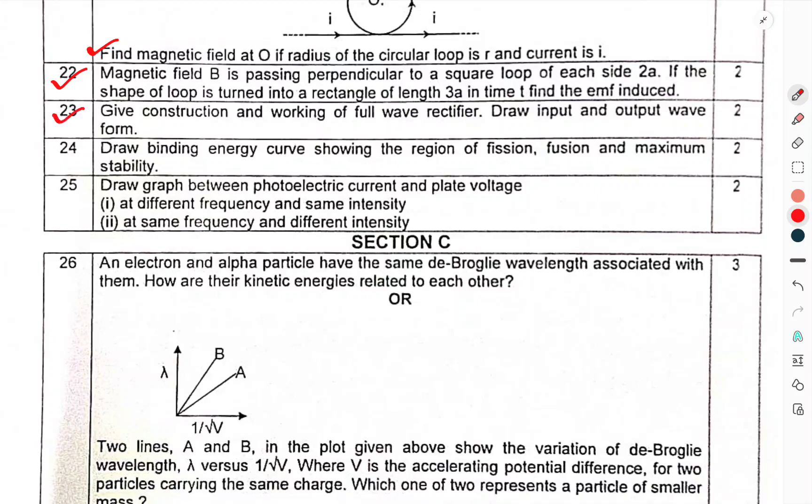Question 23: Give the construction and working of full wave rectifier. Draw input and output waveform. Question 24: Draw the binding energy curve showing the region of fission, fusion and maximum stability. Question 25: Draw the graph between photoelectric current and plate voltage at different frequency and same intensity, at same frequency and different intensity.